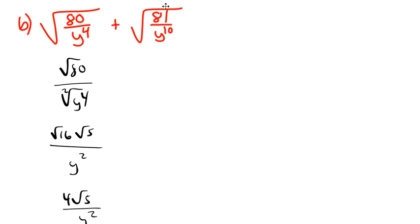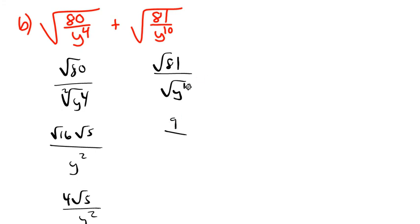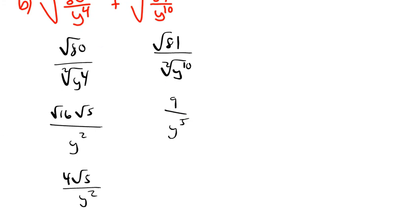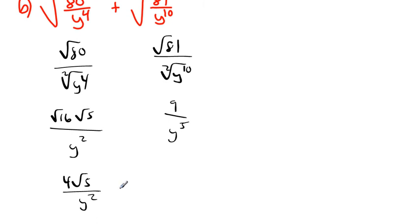Now the right side: square root of 81 over y to the power of 10. Square root of 81 is a perfect square — that's just 9. And the square root of y to the 10 — since 10 divided by 2 is 5 — that's y to the power of 5. So the right side simplifies to 9 over y to the power of 5.